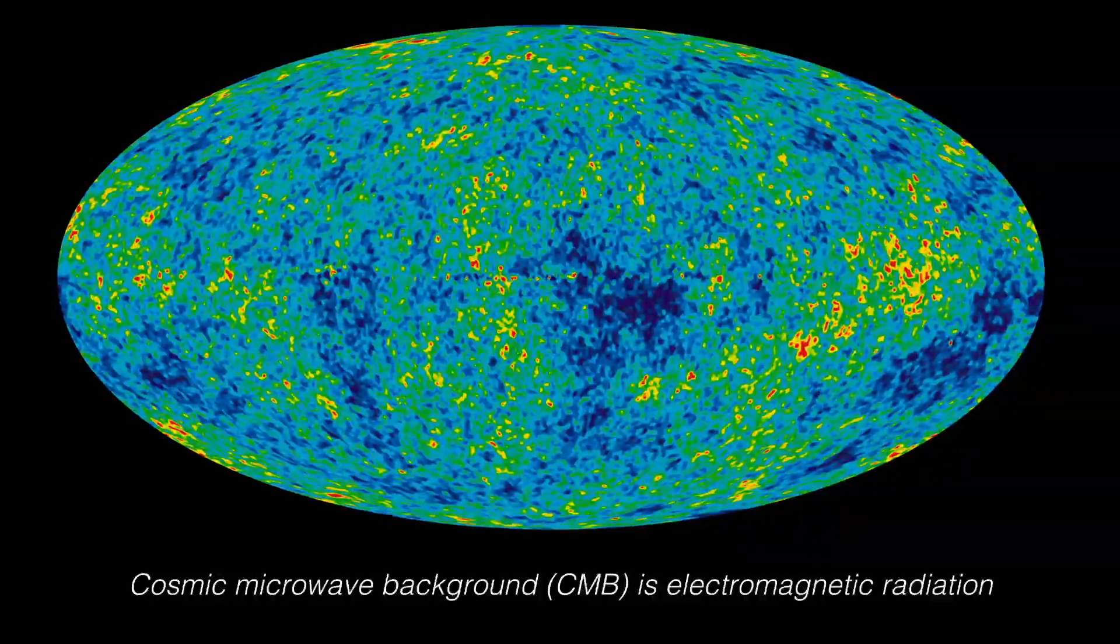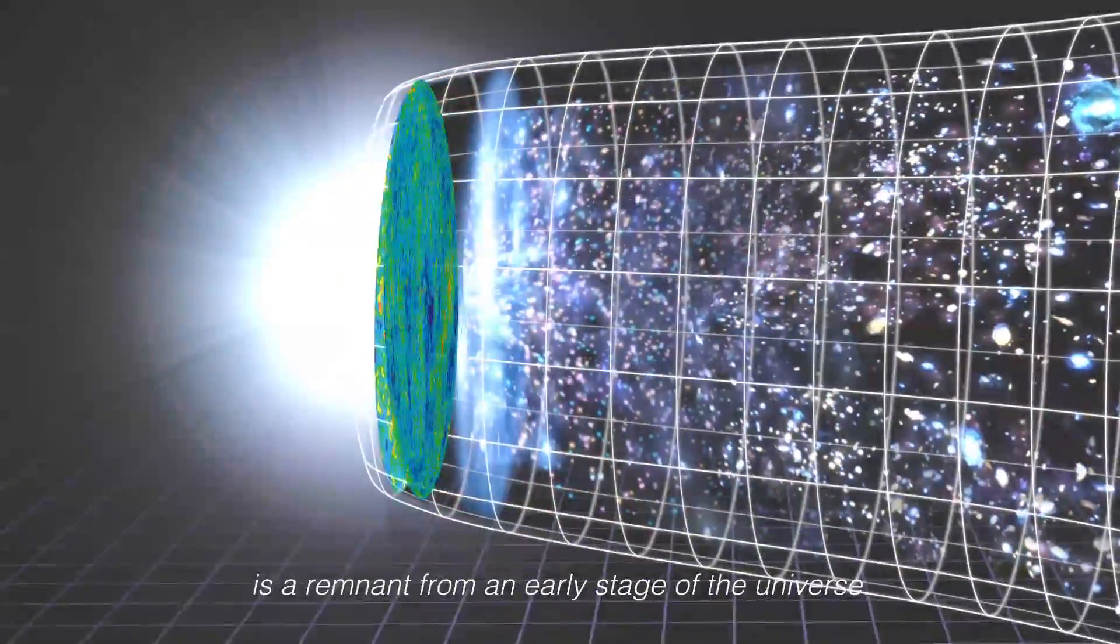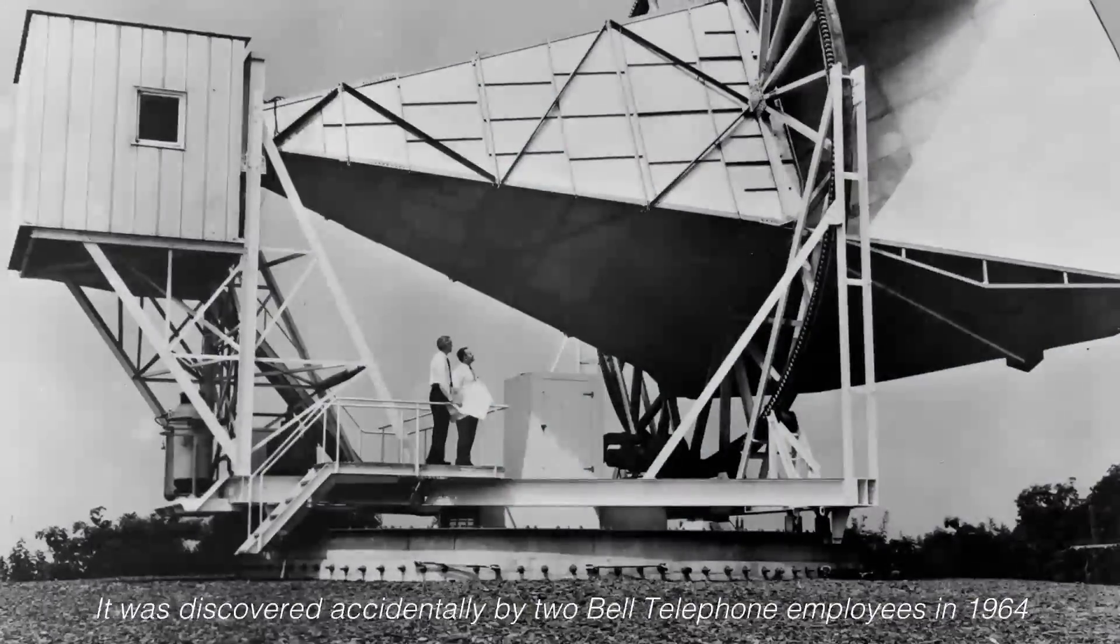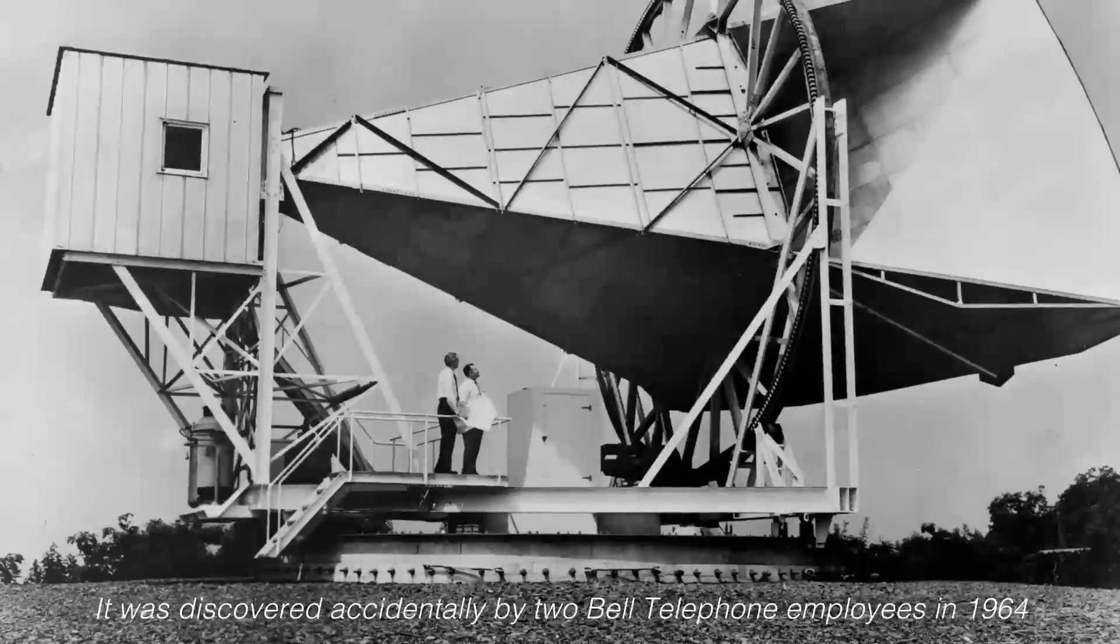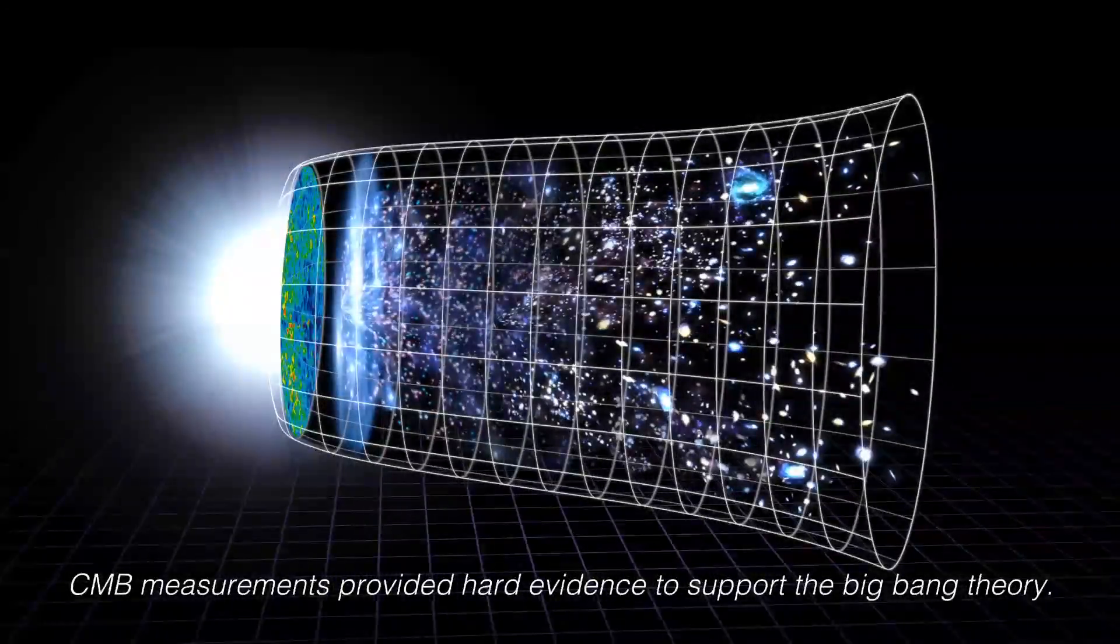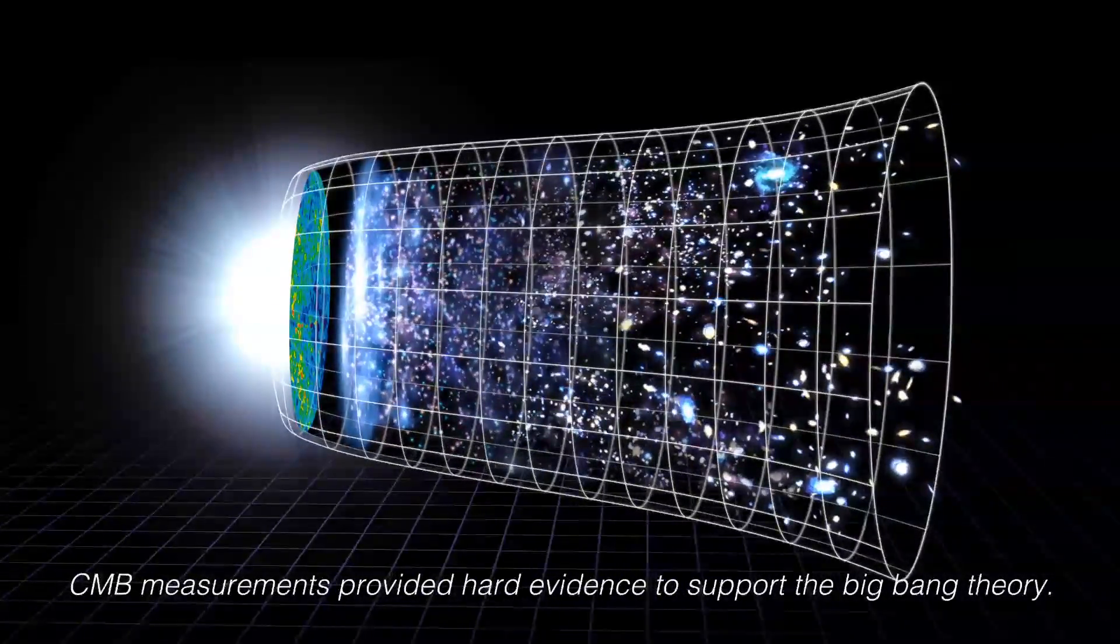Cosmic Microwave background, CMB, is electromagnetic radiation, a remnant from an early stage of the universe. It was discovered accidentally by two Bell telephone employees in 1964 while working on communication satellite experiments. CMB measurements provided hard evidence to support the Big Bang Theory.